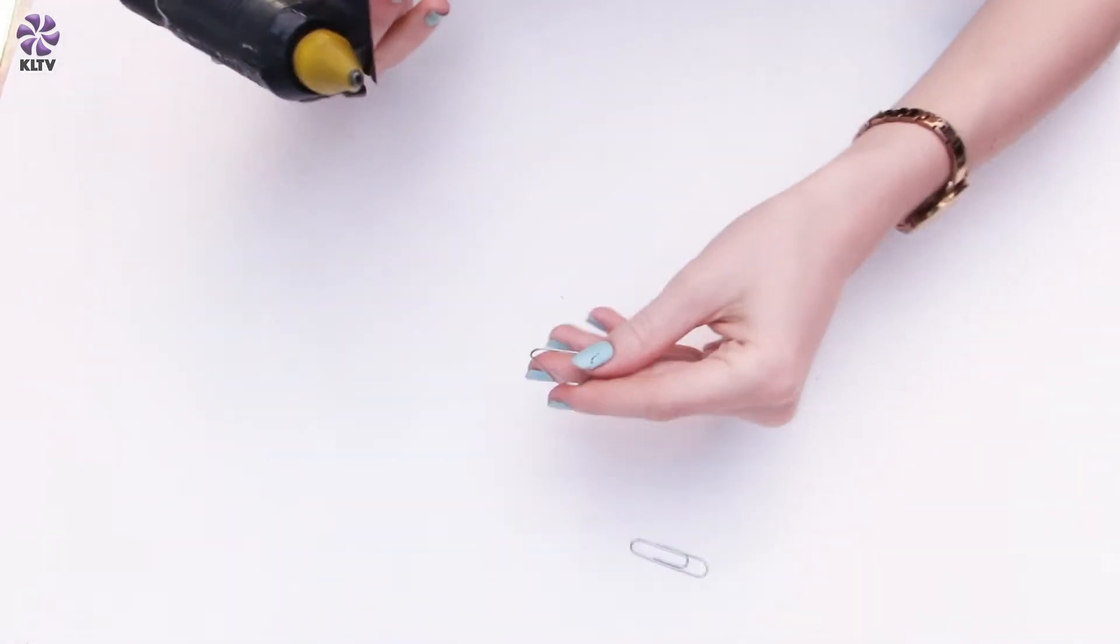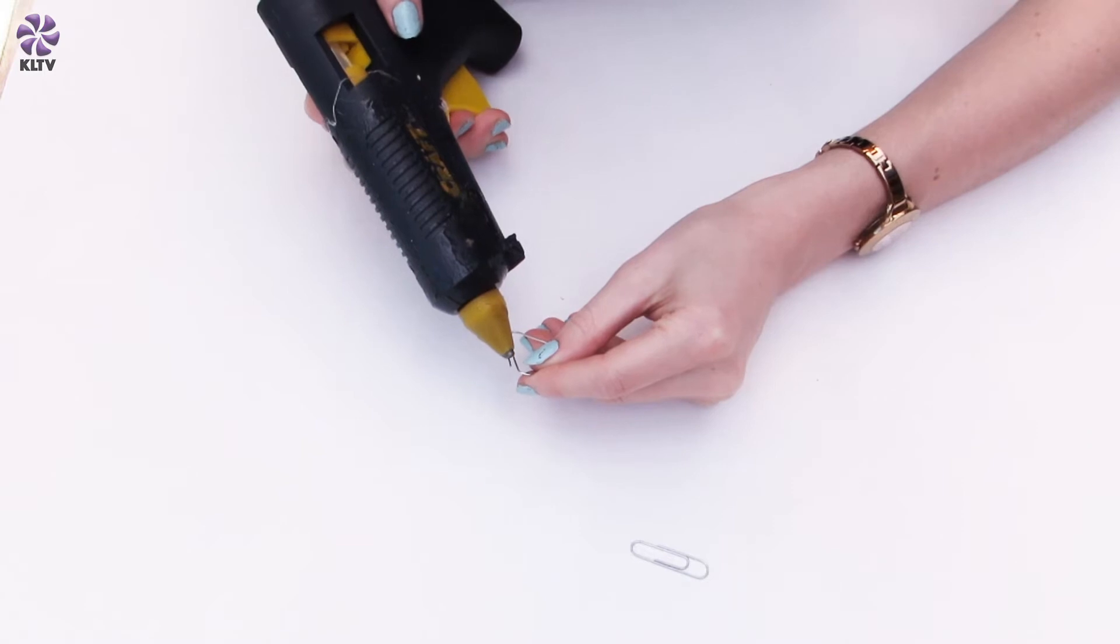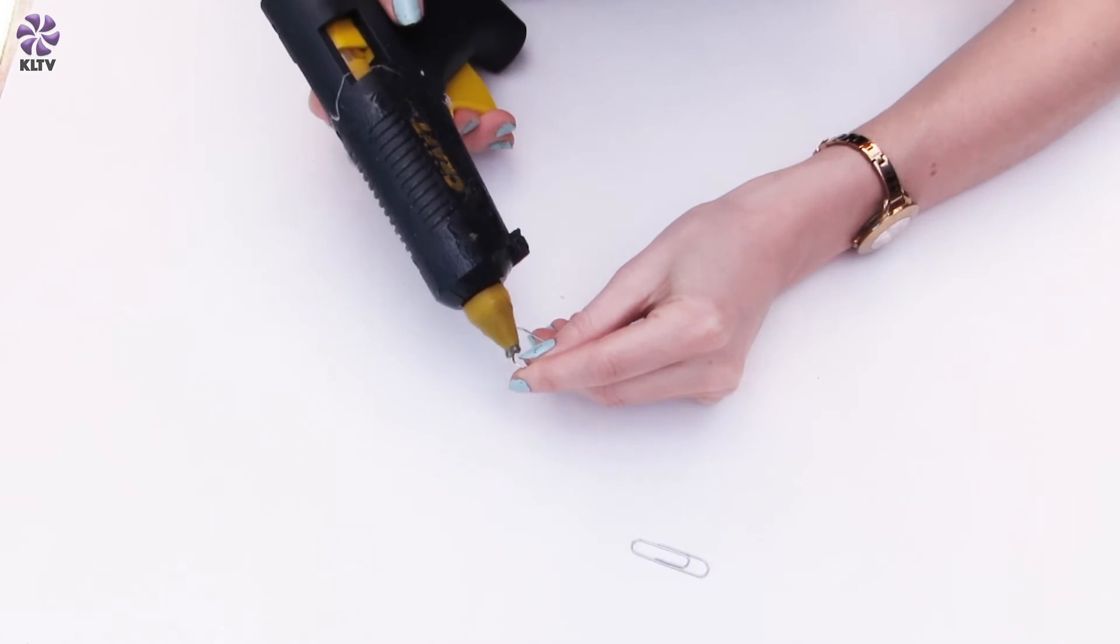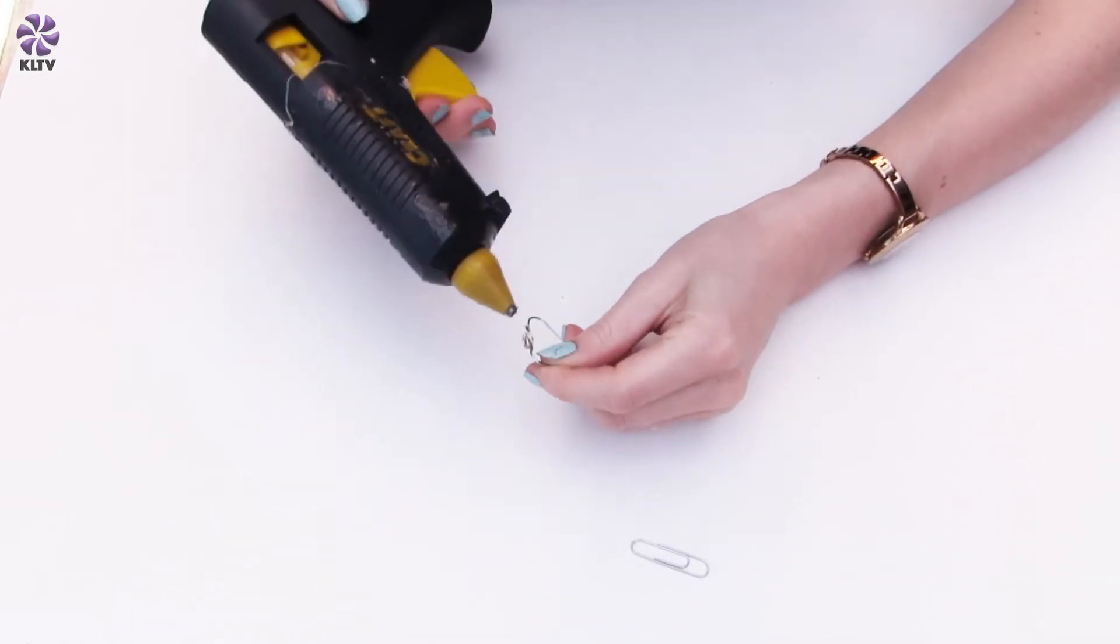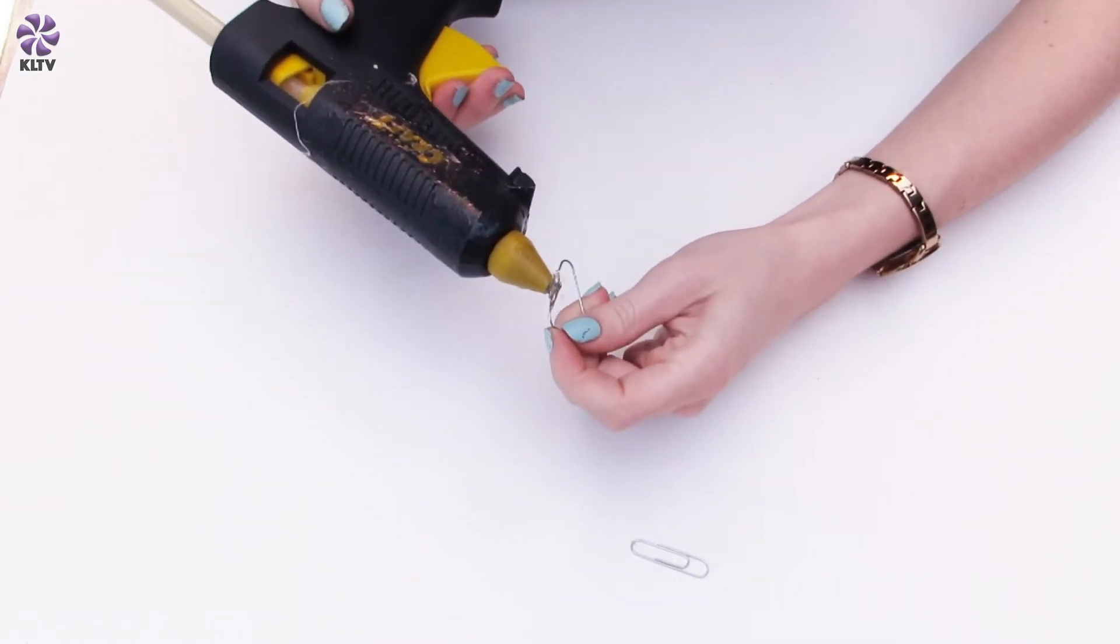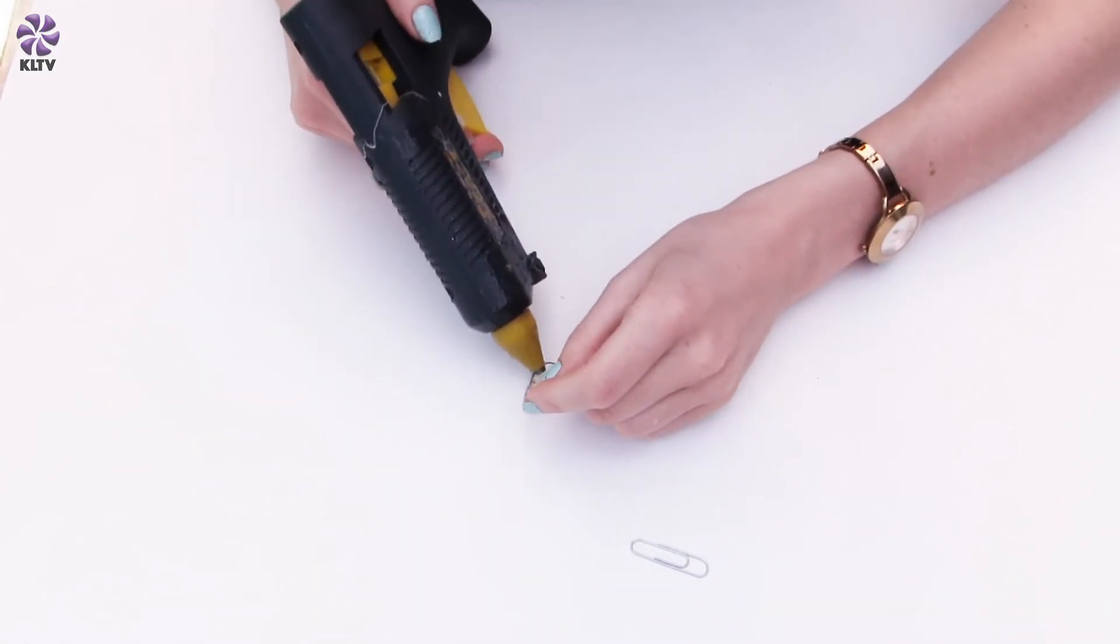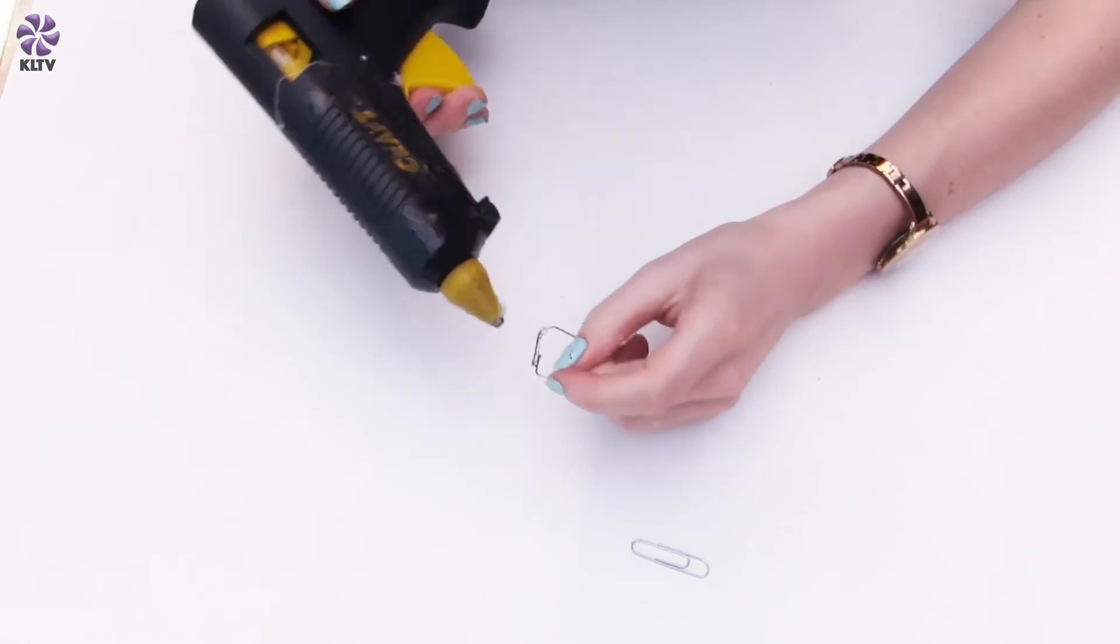Hopefully now it's nice and hot. Remember, if you're young, then you're going to need an adult to help you with this. And you just want to take a nice amount onto that end. Now try to use the end of your hot glue gun to smooth this out because we don't want a massive glob of this hot glue on this.